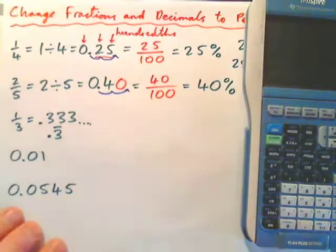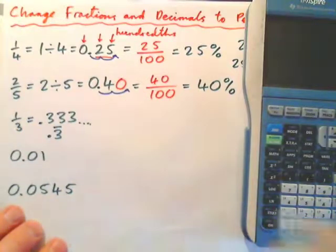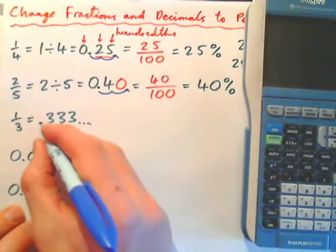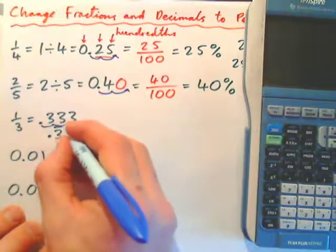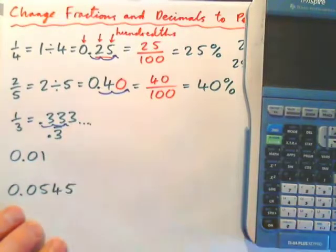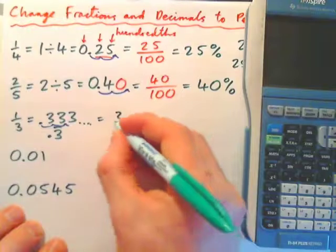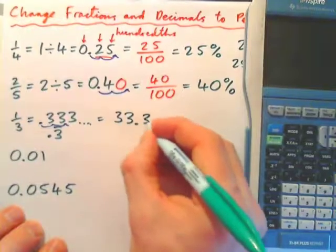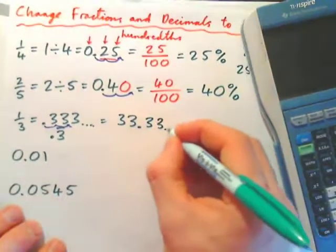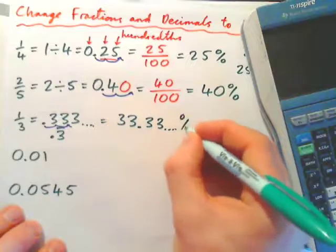And we can skip this decimal, move it two spaces to the right, to get thirty-three point three, three continuing percent.